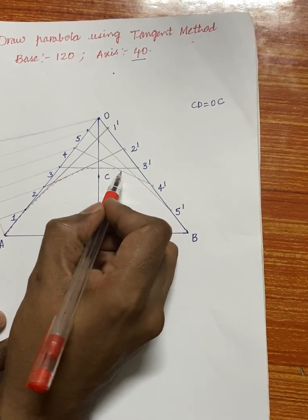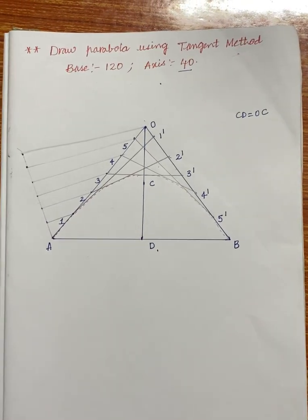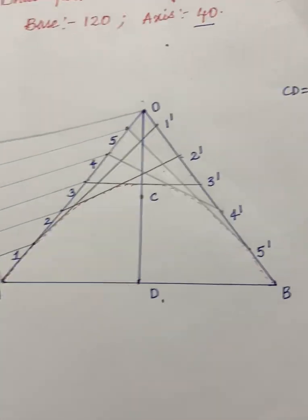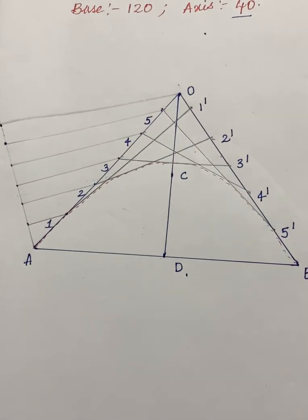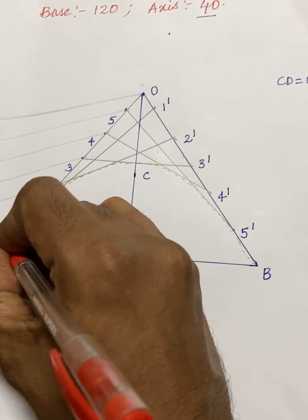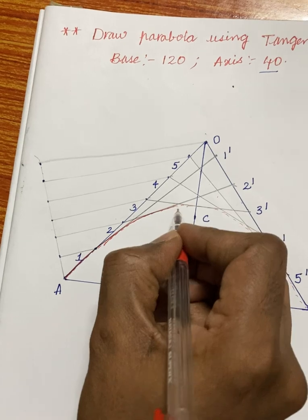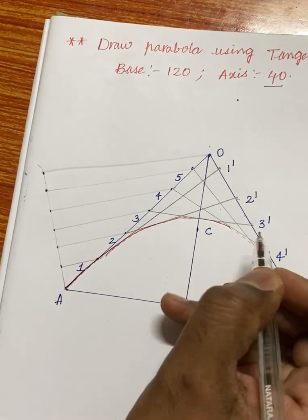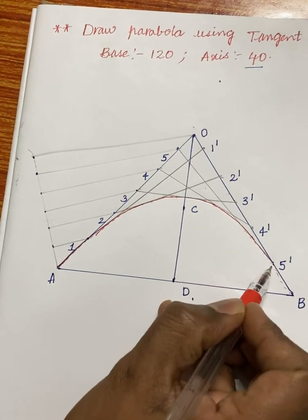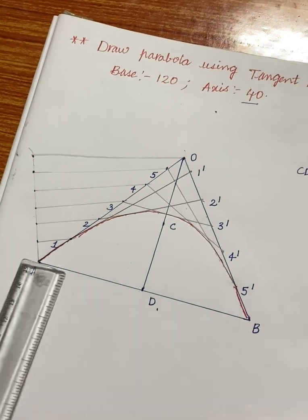Now trace the parabola curve smoothly from A to B along all the tangent points. When you use proper instruments you will get a much neater result. Taking an HB pencil, draw through all the points to get the final curve, which is the parabola drawn by the tangent method.